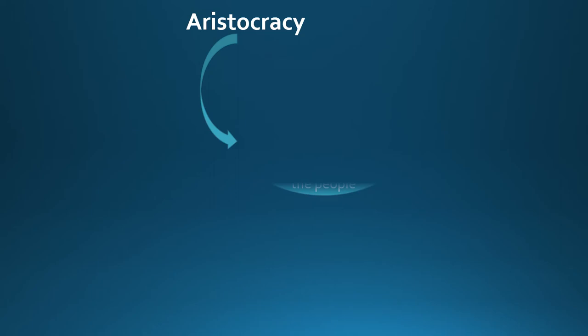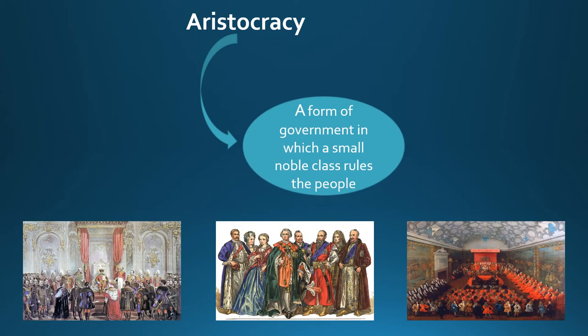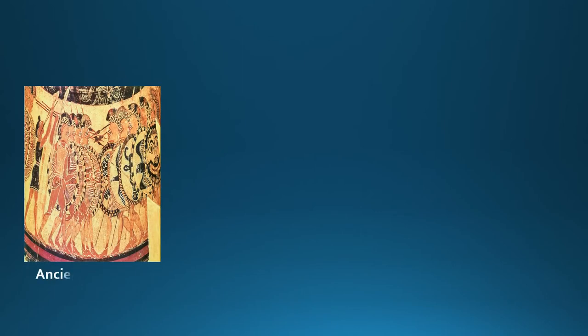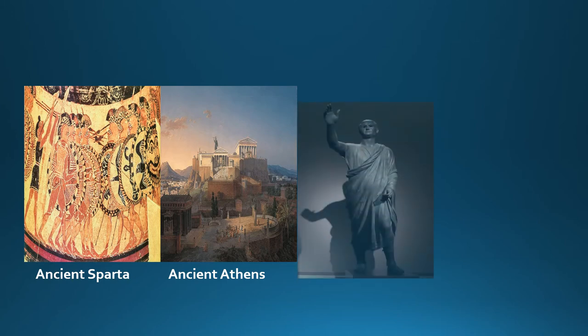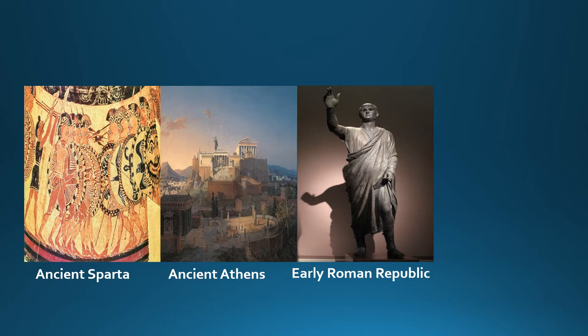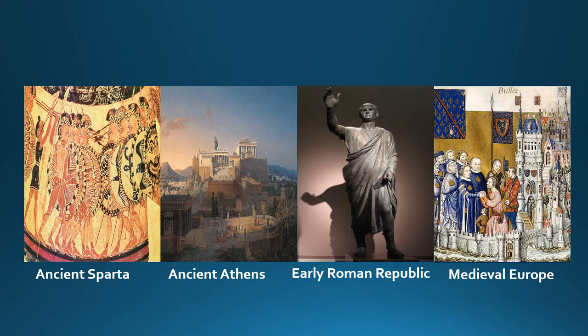An aristocracy is a form of government in which a small noble class rules the people; members of this class are called aristocrats. Examples include ancient Sparta with the Spartiates — upper-class soldiers who elected the Spartan elders serving in the Gerousia, the Spartan Council of Elders — ancient Athens with the Eupatridae, an Athenian noble class who held the sole privilege of occupying major government positions during the 8th and 7th centuries BC, the Roman Republic where patricians occupied the Senate, and medieval Europe where feudal lords wielded great political power.